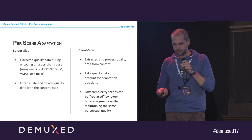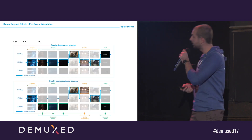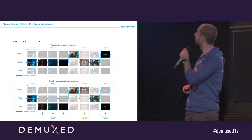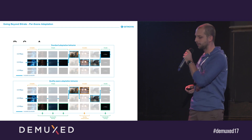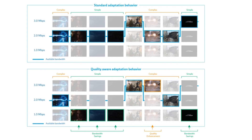That sounds a little confusing, but looking at the graphic — though the headline isn't visible — the upper part shows standard adaptation behavior. For simplicity, we have three bitrates, three quality levels: one, two, and three megabits. Looking at a portion reflecting a very simple, low-complexity scene, a normal ABR logic would simply sustain the same quality if bandwidth conditions allow.